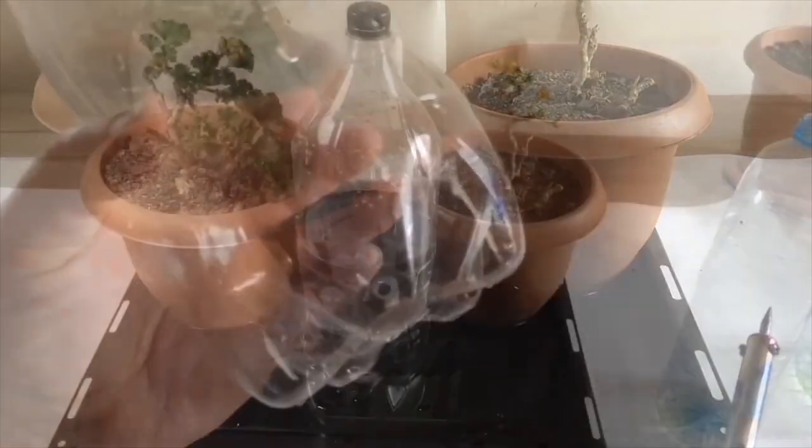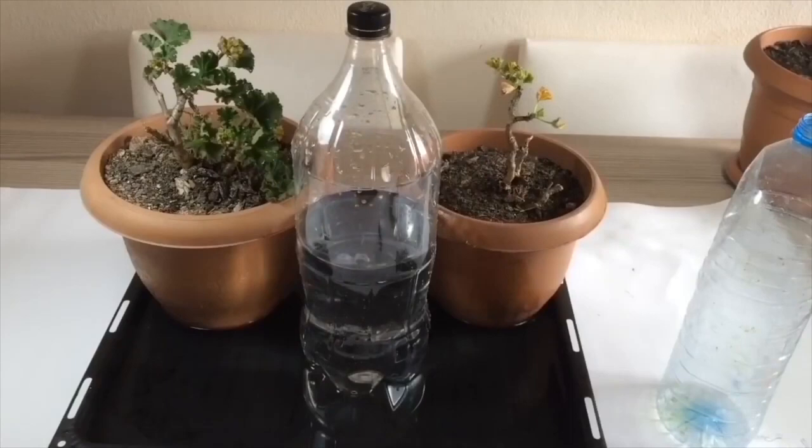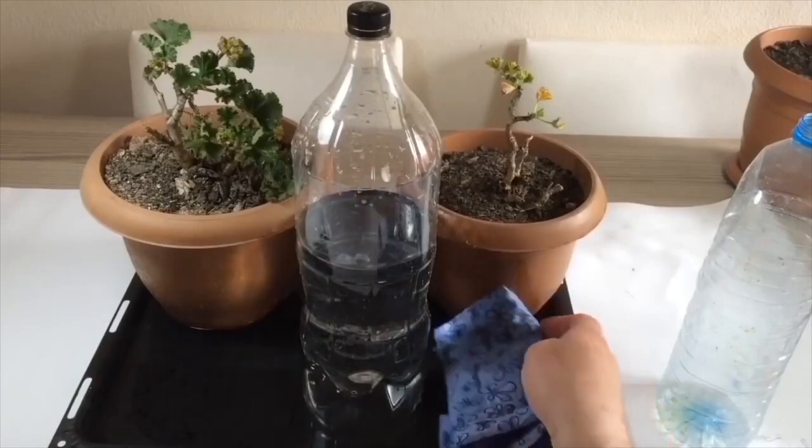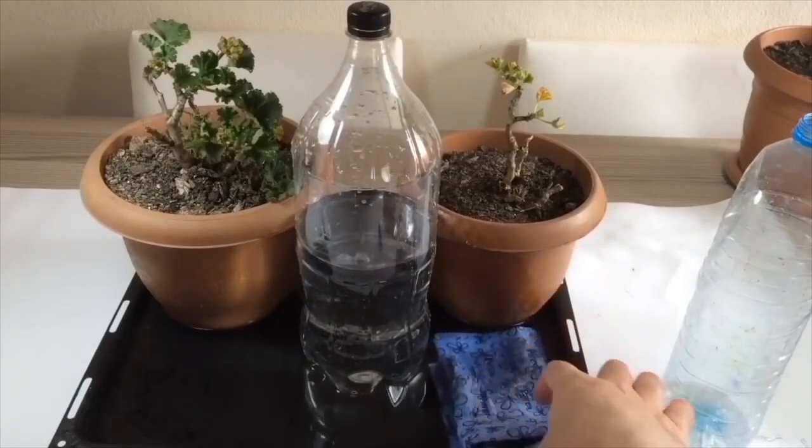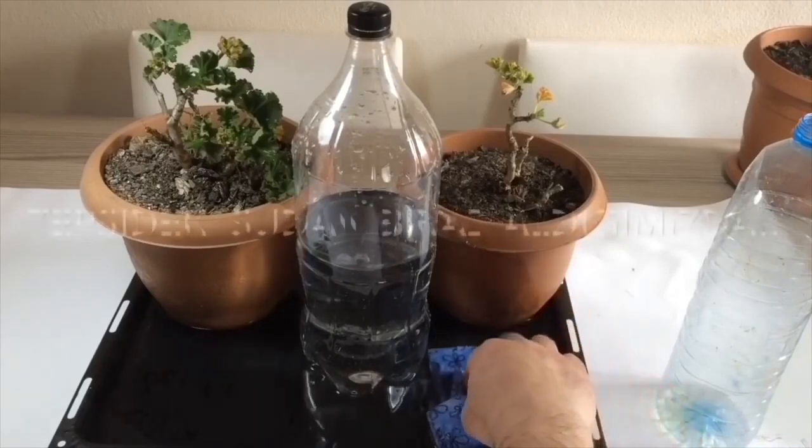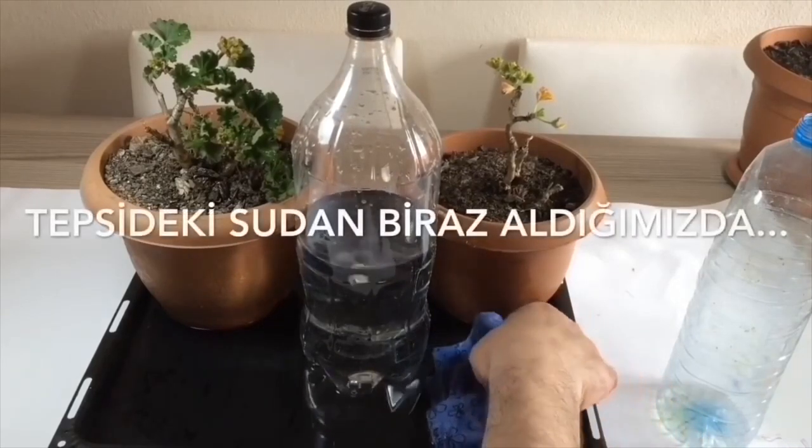Put it in the tray and put water in the bottle and close it. The water will drain into the tray from the hole at the bottom. The water flow stops when the water in the tray reaches the level of the hole at the top.